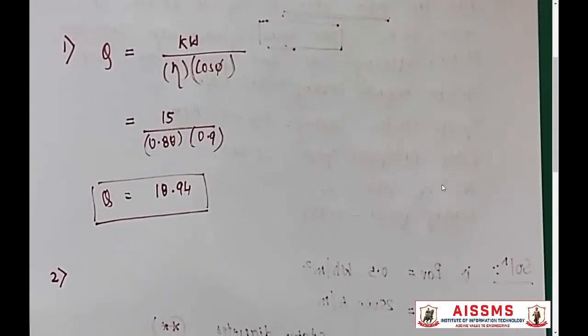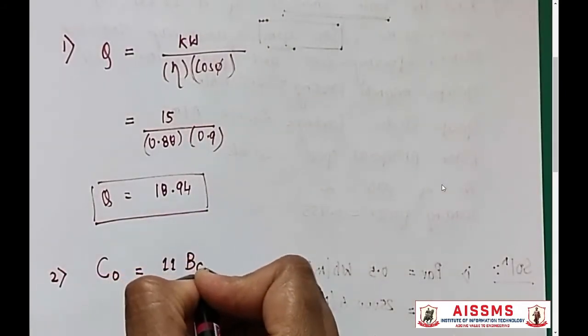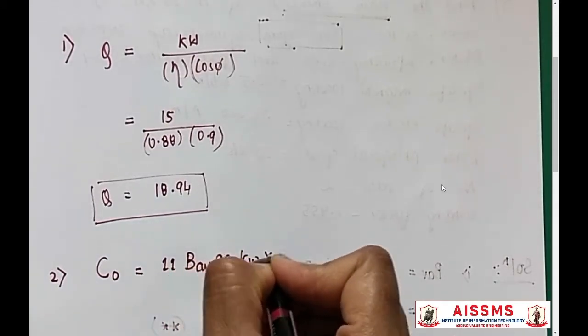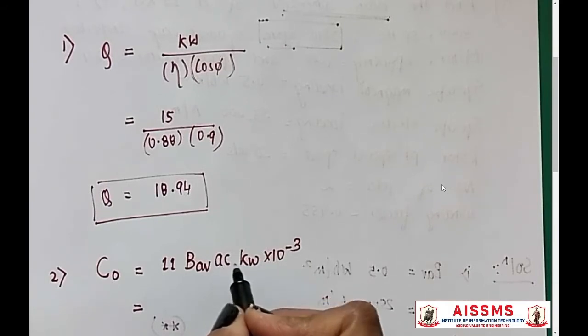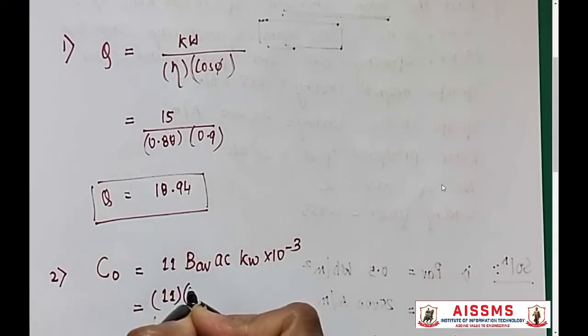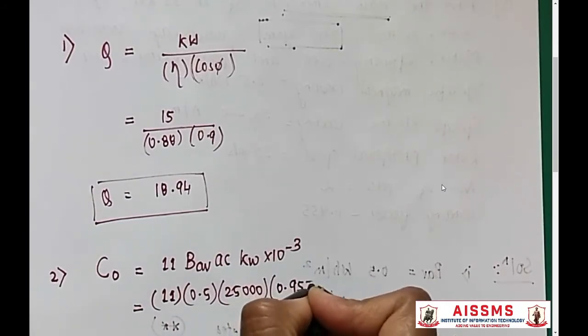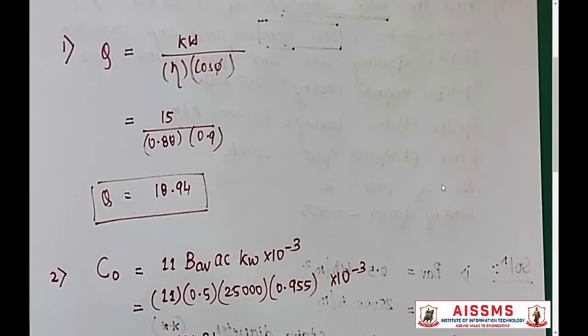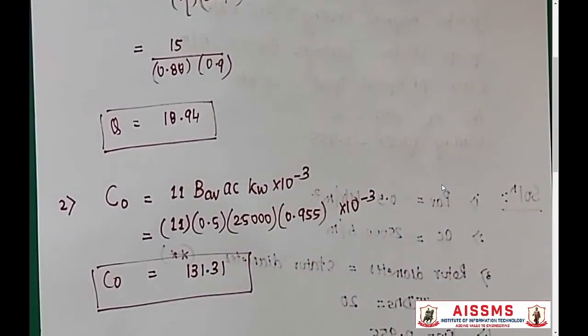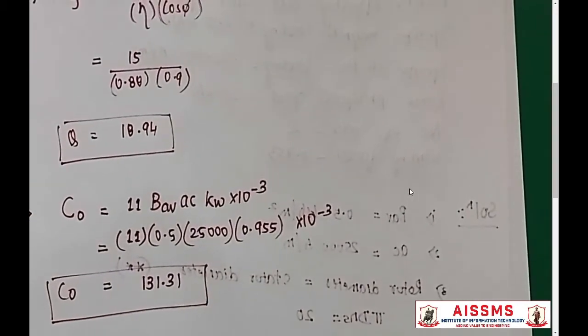We already know that the output coefficient C0 is given by 11 BAV AC KW times 10 raised to power minus 3. We already have the values of specific magnetic loading, specific electric loading, and winding factor. We will put these values: 11 times 0.5 times 25,000 times 0.955 times 10 raised to power minus 3. This gives the output coefficient as 131.31.